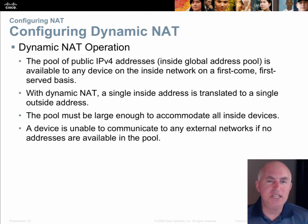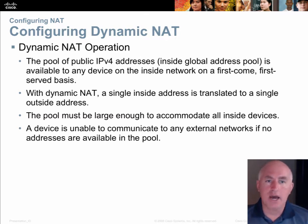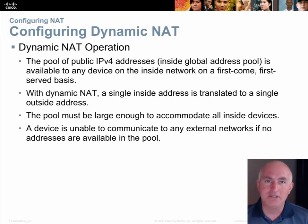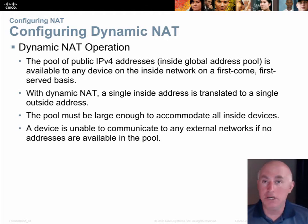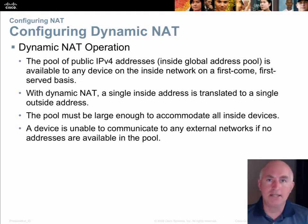Dynamic NAT is the least used form of NAT. This is where you create a pool of public addresses doled out to inside, privately-addressed devices on a first-come, first-served basis until they're gone. The pool must be large enough to accommodate all inside devices. In today's always-on-the-internet world where every device is communicating to the internet all day long, this is simply not a very valid approach. But we'll still learn how to do it — it's on your Cisco exam, and creating PAT is only one small change from these same steps.